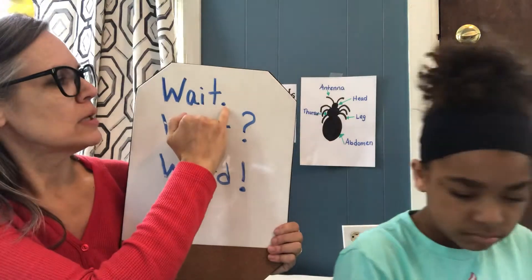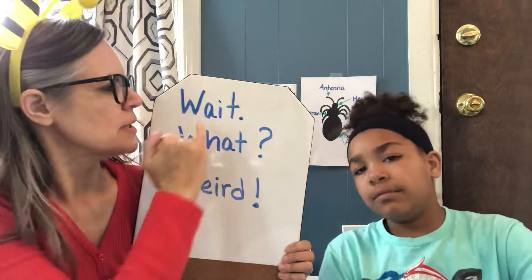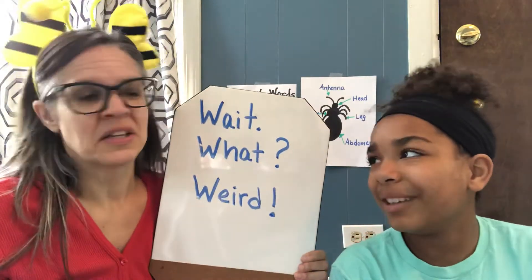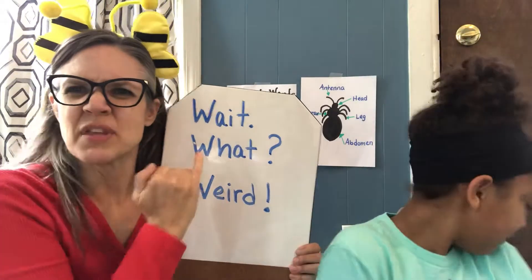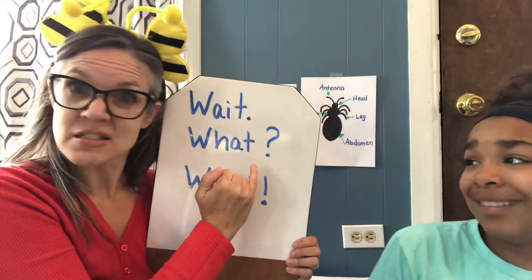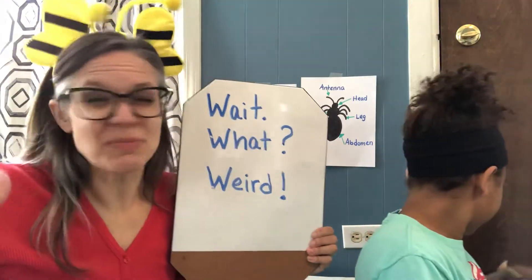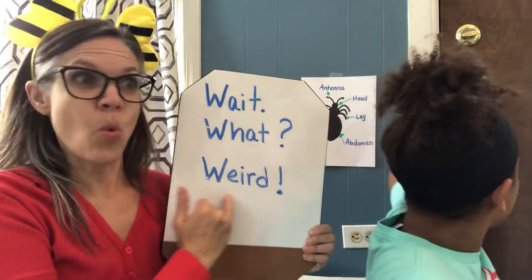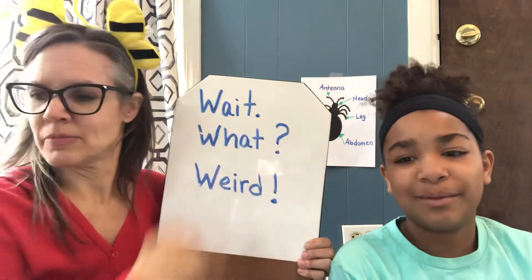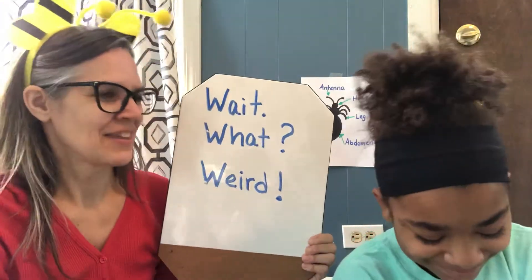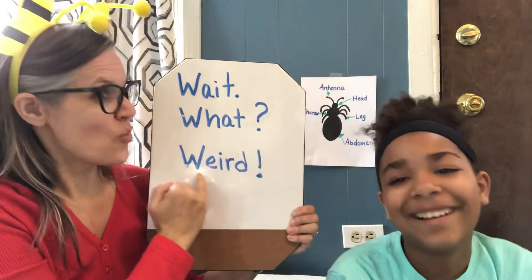Now it's time for 'Wait? What! Weird.' Here's the period — that means someone is just telling you something. This says 'wait.' The question mark means you want to know something — in this case it says 'what.' And the exclamation point means maybe there's danger or something super exciting — in our case it says 'weird,' like you can't even believe it. So: Wait. What? Weird!